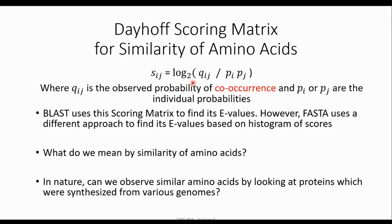Let's go through the details. It is Sij, so we are already familiar with scoring metrics. This one has a two-dimensional case, like we have rows and columns — for example an m by n matrix. Now, how to find the score of each cell inside this matrix. For that we can use this logarithm base 2. And what is Qij? Qij is the observed probability of co-occurrence.